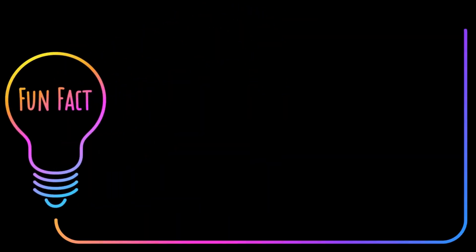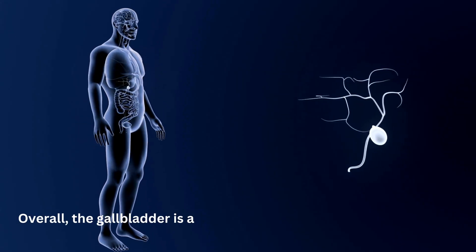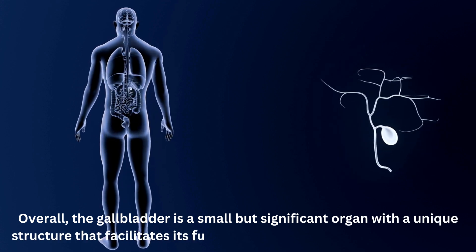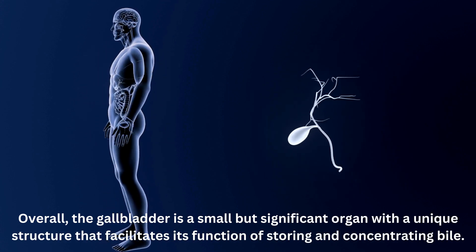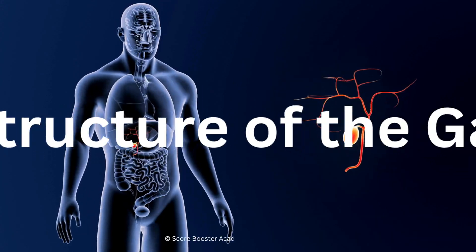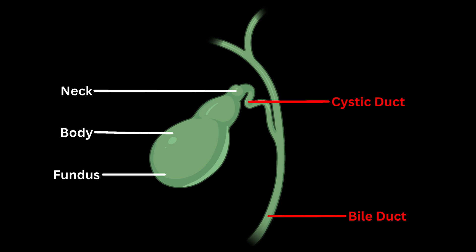Did you know that the gallbladder can hold approximately 30 to 50 milliliters of bile when it is full? Overall, the gallbladder is a small but significant organ with a unique structure that facilitates its function of storing and concentrating bile. Its external and internal features, along with the associated bile ducts, contribute to the efficient storage and release of bile for digestion.